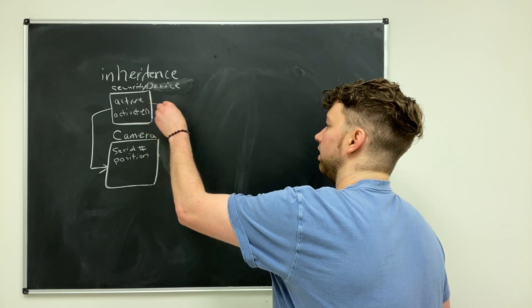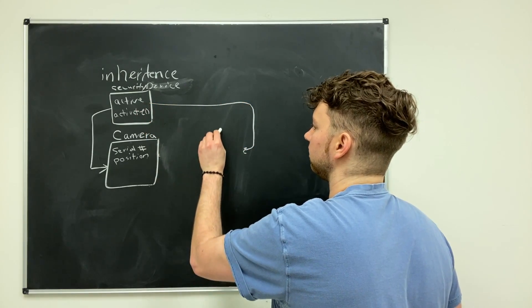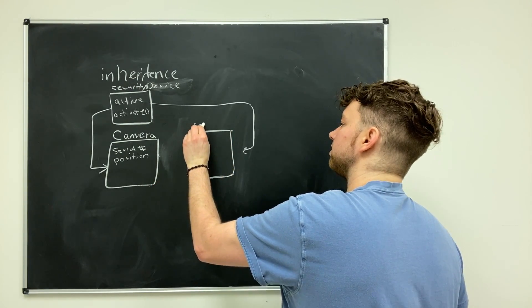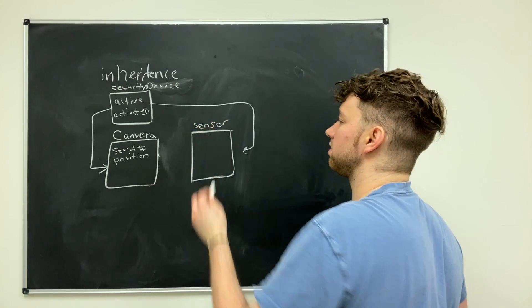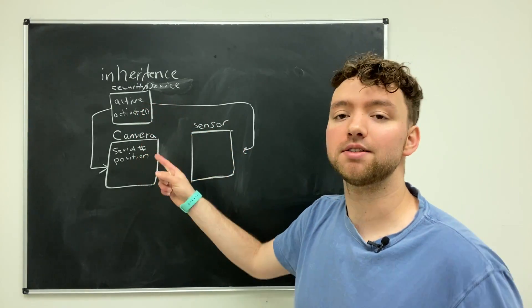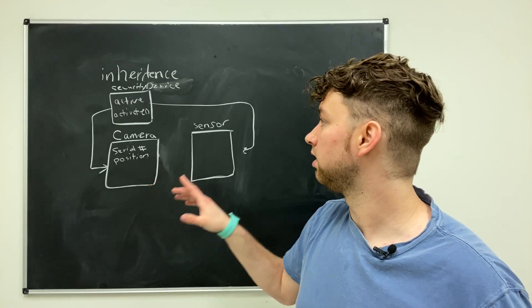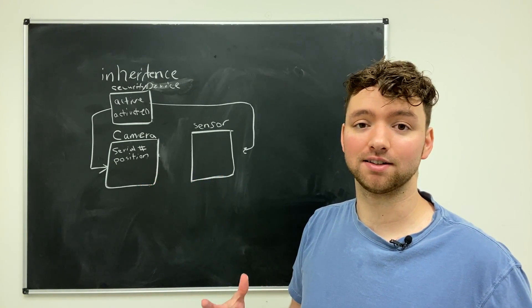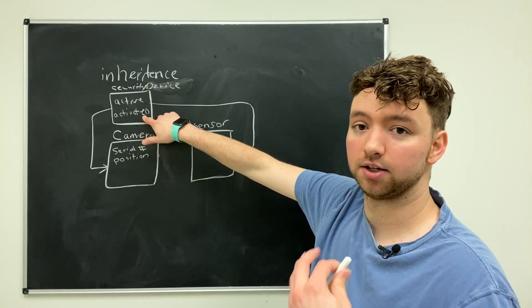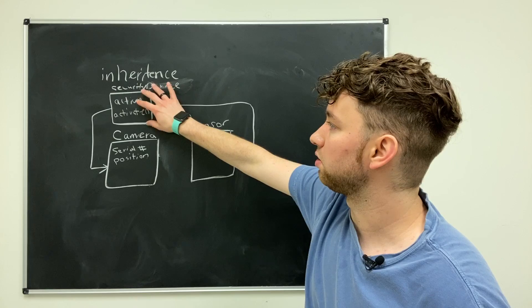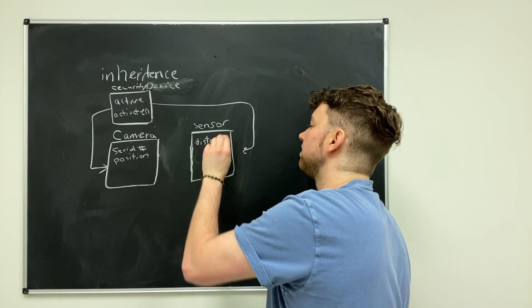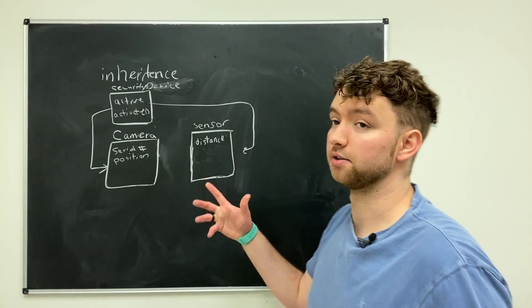So an example here is we might make another class and this one is going to be called a sensor. So notice that a sensor is also usually considered a security device, but it's different than a camera. That being said, a camera and a sensor has a lot of things in common such as whether or not it's currently active, you know, calling the API to turn the device on. These are all things that are shared between camera and sensor. You can put stuff specific to sensors inside of the sensor class.